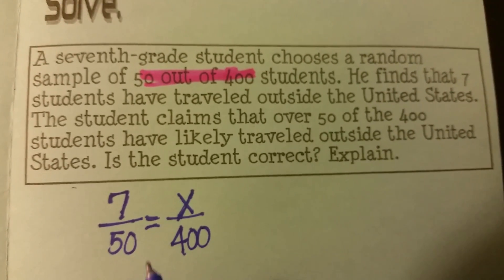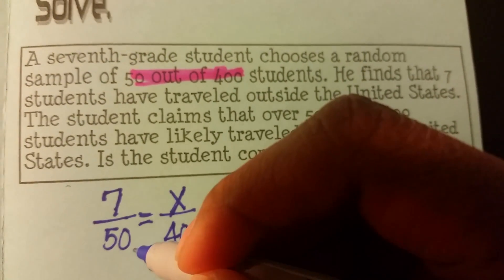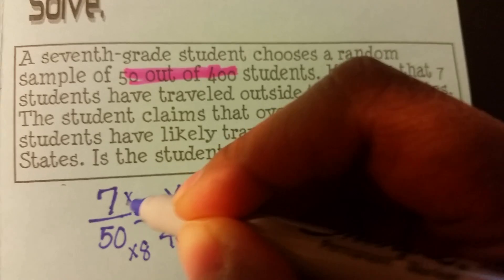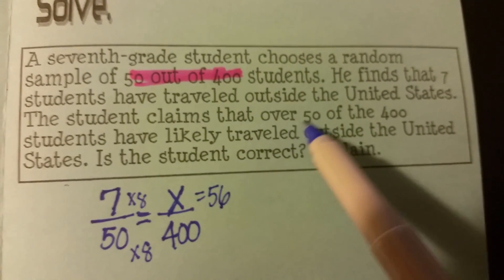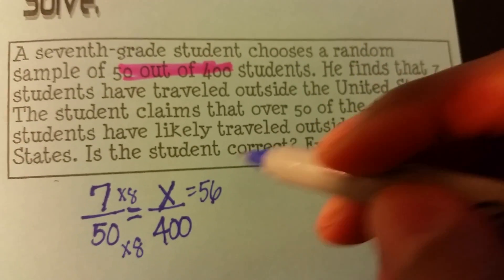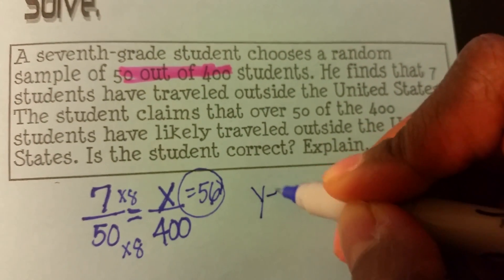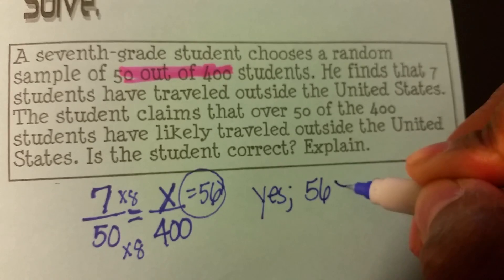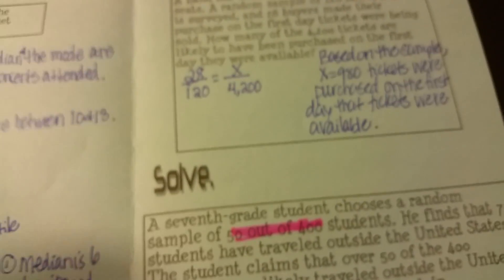You and your partner should have seen a constant rate here. How do I get from 50 to 400? I multiply by 8. So I multiply 7 by 8 and get 56. The student claims over 50 of the 400 traveled outside the United States — is this student correct? Yes, because X is 56 and it's more than 50, so 56 is greater than 50 and the student is correct. We just finished making inferences from a random sample using proportional reasoning.